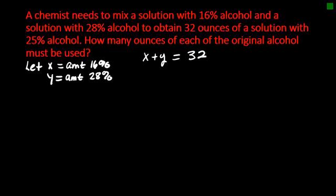16% is the same as 0.16. If I multiply that by the amount of the 16% and multiply 0.28 by Y, which is the amount of the 28%, I should get a 25% solution which is 0.25 times a total of 32 ounces. We need to solve this system.